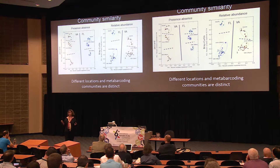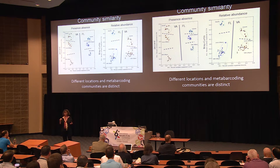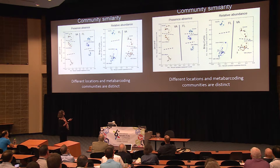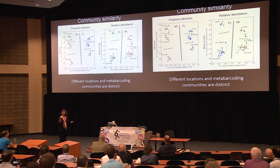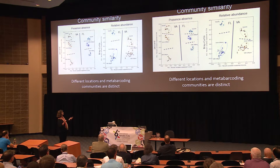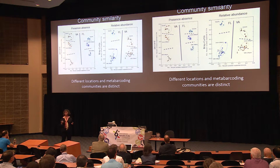Several plots show similarity across locations and across the different community types — the sessile community and the two metabarcoded mobile fractions. Virginia and Florida are really well separated regardless of presence-absence versus relative abundance analyses. The sessile fraction is separated from the 2-millimeter to 500-micron fraction, which is separated from the 500-micron to 106-micron fraction. Really, really clear patterns — much clearer, actually, than we expected.